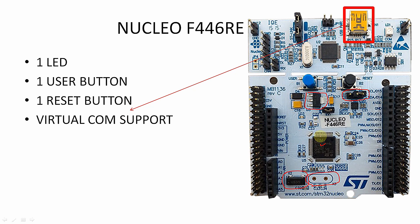If you take this jumper and put it to this particular pin, then the power for this microcontroller will be provided from an external 5 volt supply provided here. So you can power the microcontroller from both means with the help of this jumper — external 5 volt or from the USB port of the Nucleo development board.